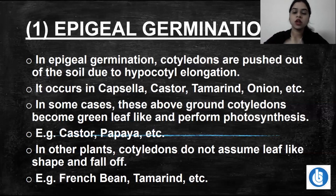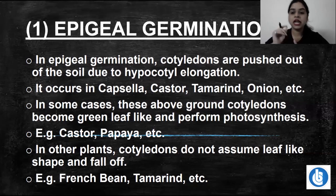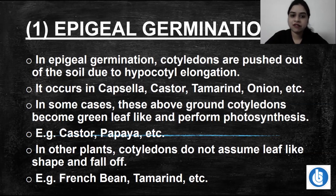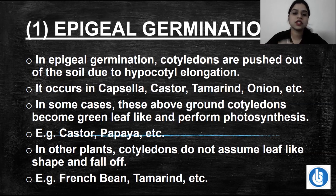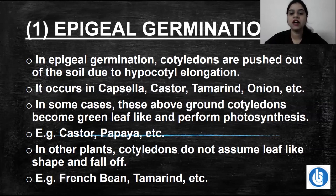When the cotyledon comes above ground, in some cases it becomes foliar — leaf-like — turns green due to the presence of photosynthetic pigment chlorophyll, and starts photosynthesis. In other cases, the cotyledon takes no foliar structure, undergoes no modification, and eventually withers off and falls from the plant. The photosynthetic condition is seen in castor and papaya; withering off is seen in French bean and tamarind.